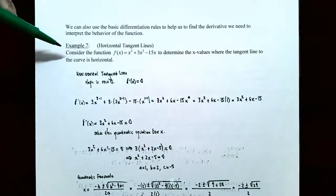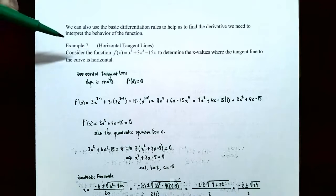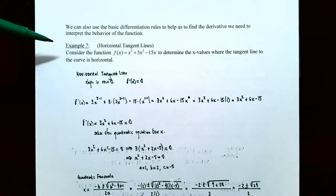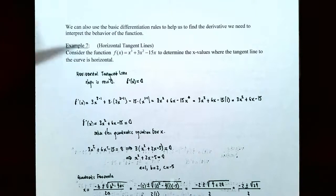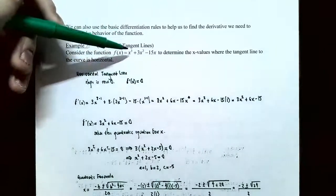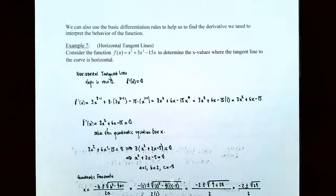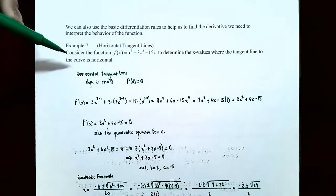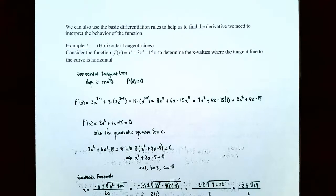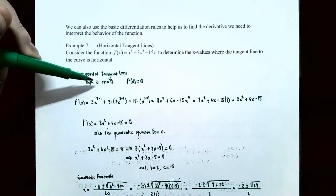In the previous example we found the equation of the tangent line. There are other types of problems involving tangent lines we can now solve using differentiation rules. Example 7: horizontal tangent lines. Consider the function f of x equals x cubed plus 3x squared minus 15x. We want to find the x values where the tangent line to the curve is horizontal — meaning the slope of the tangent line is 0, since horizontal lines have slope 0.